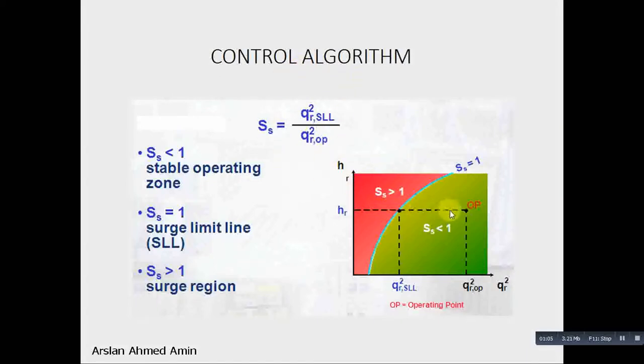So if the point is here, then this ratio will be less than 1. If the operating point is at the surge limit line, this surge parameter will be equal to 1. And below on the left side of this line, the surge parameter would be greater than 1. So this is how the controller checks whether the operating point is on the safe side.